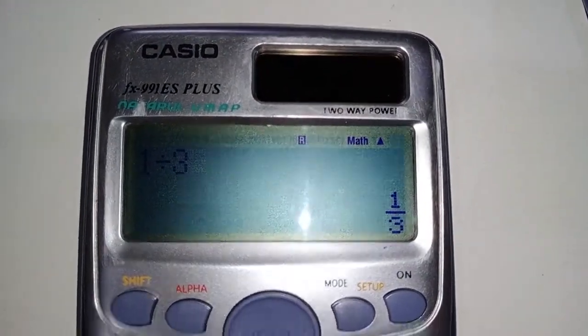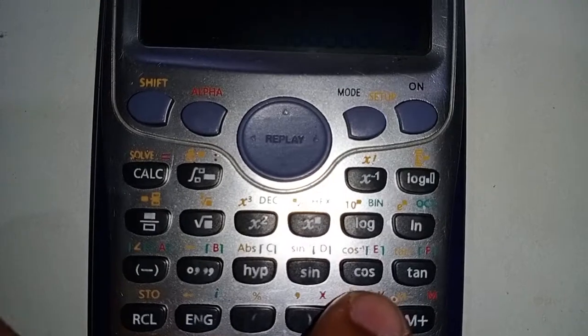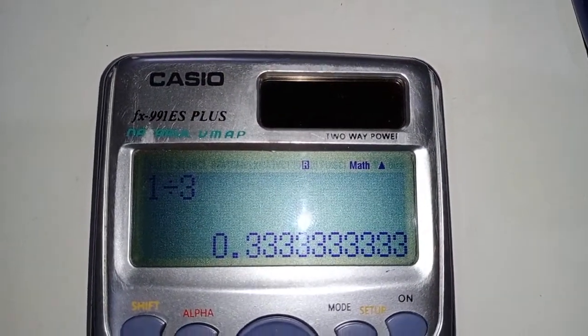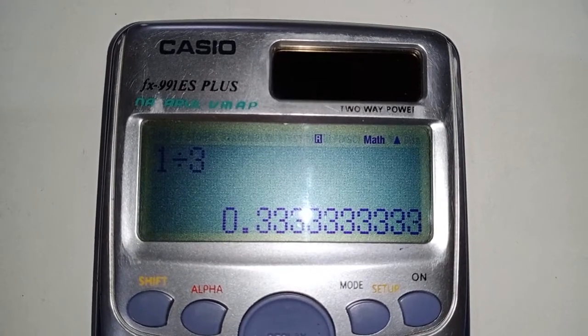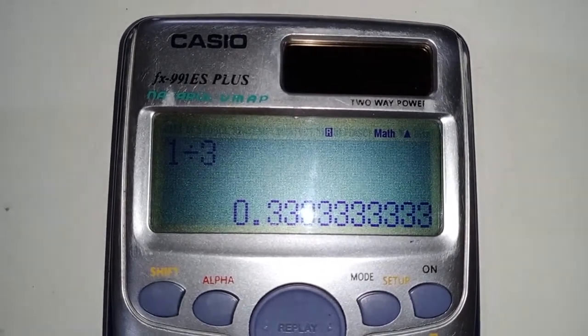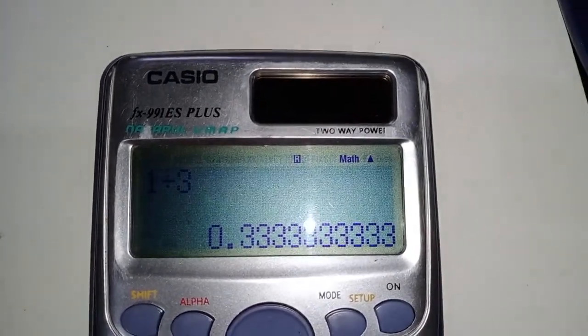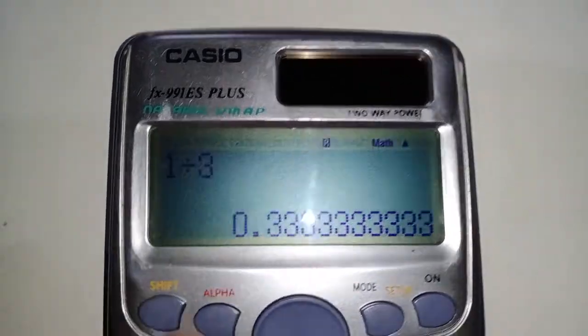0.333 and so on. But if I want to fix my calculator to, let's say, 4 decimal places, then what am I supposed to do?